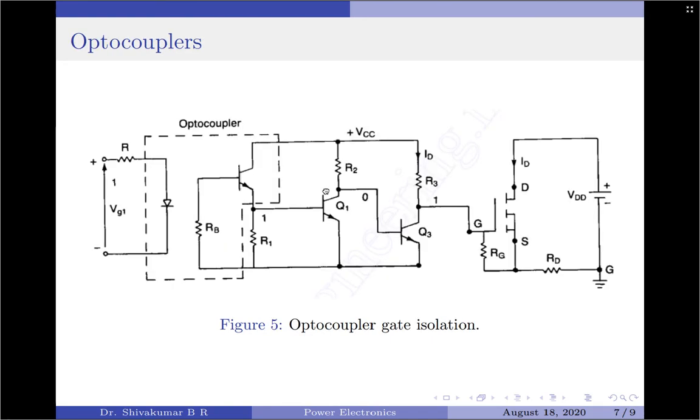Now, coming to the second type of providing isolation for control or gate signals is the optocoupler technique. Optocouplers combine an infrared LED and a silicon photo transistor. The input signal is applied to the ILED and the output is taken from the photo transistor. The rise and fall times of the photo transistors are very small. Typically, the values range between two to five microseconds for turn on and for turn off it is about 300 nanoseconds. These turn on and turn off times limit the high frequency applications of the transistors.